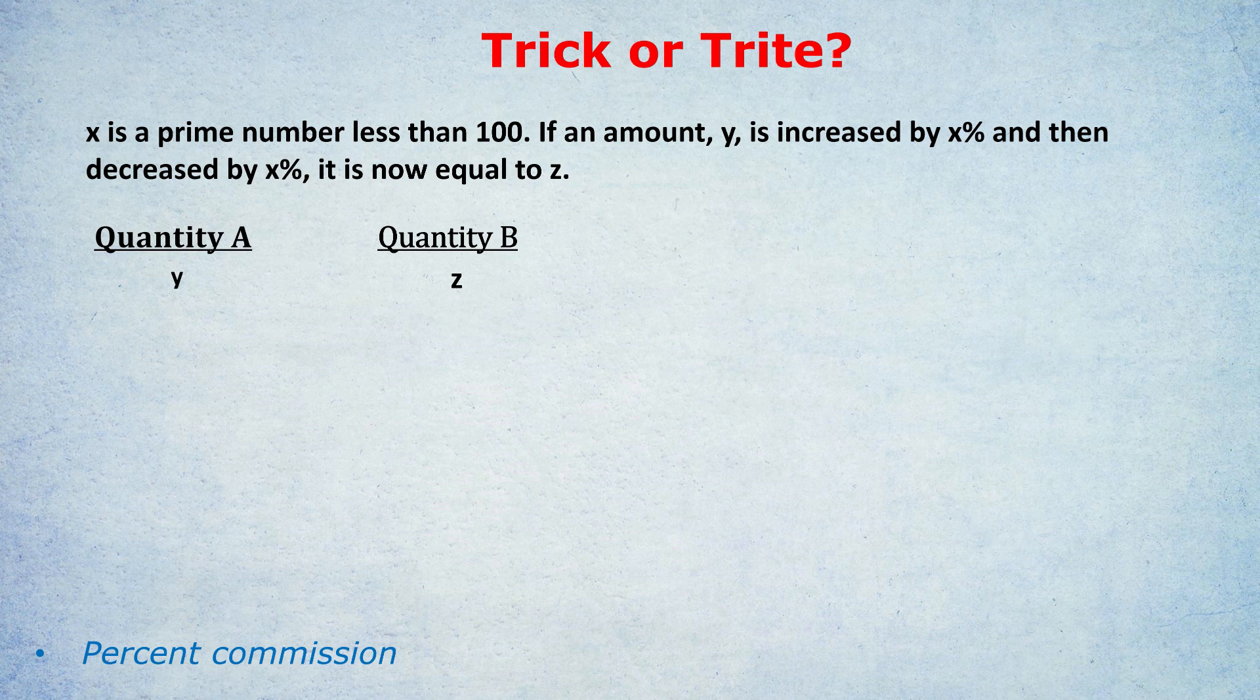Either way, if you're increasing and decreasing by the same percentage, you end up with a lower amount. So quantity A is actually bigger. Some of you would have thought that the first sentence is going to make a big difference, x is a prime number less than 100. But not particularly.